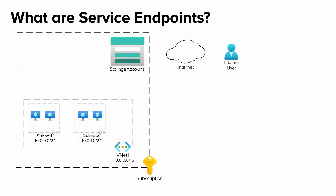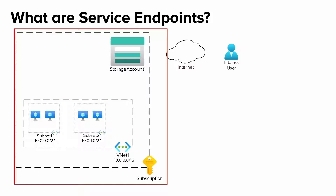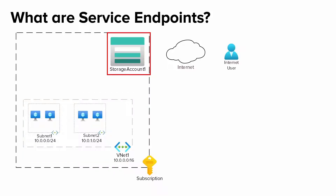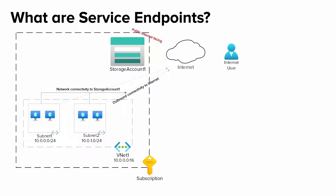Before we talk about service endpoints, let's understand the problem statement. Assume you have an Azure subscription where a few Azure VMs are hosted in subnets of your VNet. You also have an Azure PaaS service — for example, a storage account — and some data is stored there that you need to access from your Azure VMs. All resources in a VNet can communicate outbound to the internet by default, even without a public IP. Azure PaaS services such as Azure SQL databases and Azure storage accounts are public internet-facing services by default.